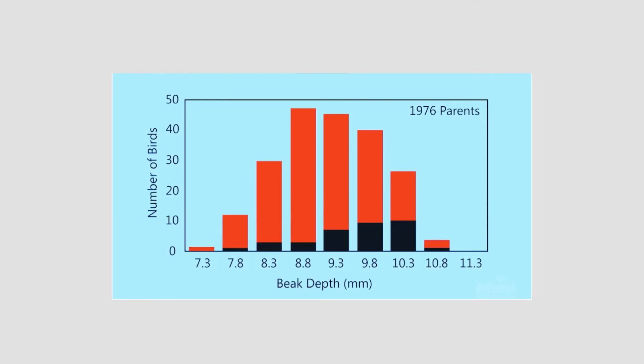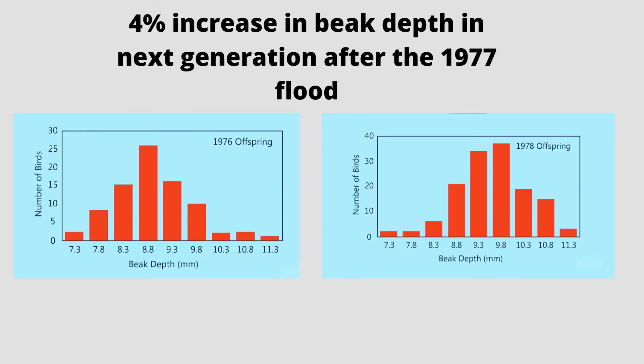The Grants found that 80% of the medium ground finches died, but noticed something peculiar — a trend in their findings. The graph drawn out by the scientists showed that the surviving finches, highlighted in black, were predominant in the bigger-beaked category. In other words, the larger the beak, the higher the likelihood of surviving the 1977 drought. When the Grants measured the beak sizes of the 1976 parents' offspring, they found that the average beak size had increased by 4% compared to the previous generation, thus proving that natural selection had changed the average beak size and, as a result, evolution had occurred.